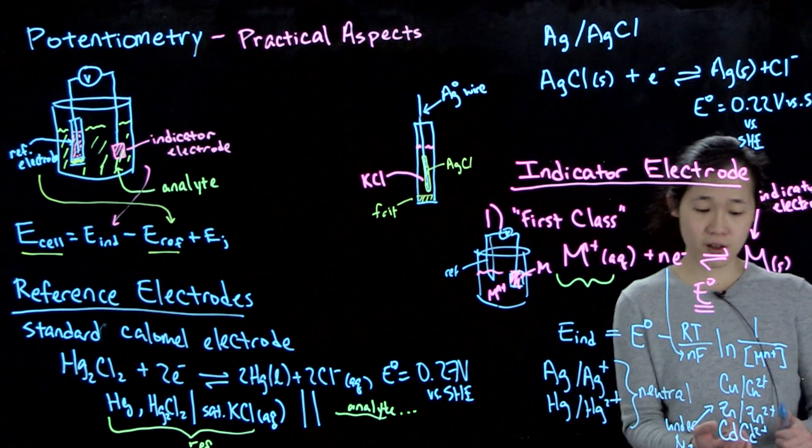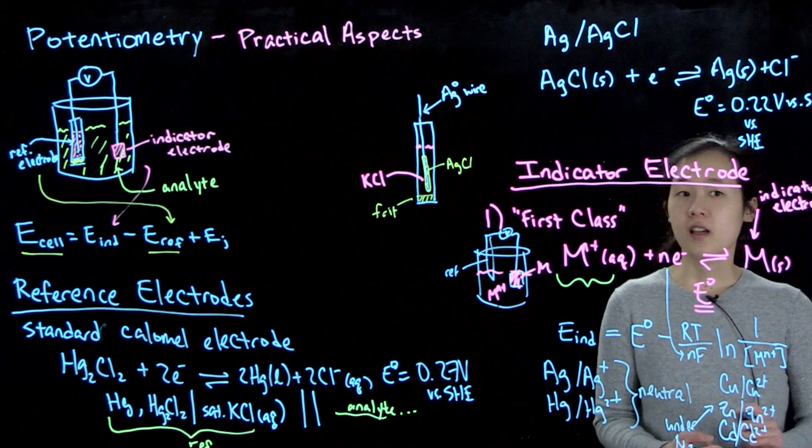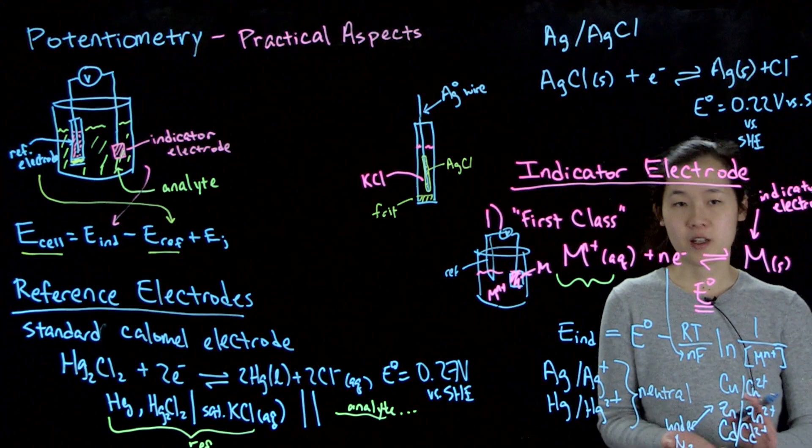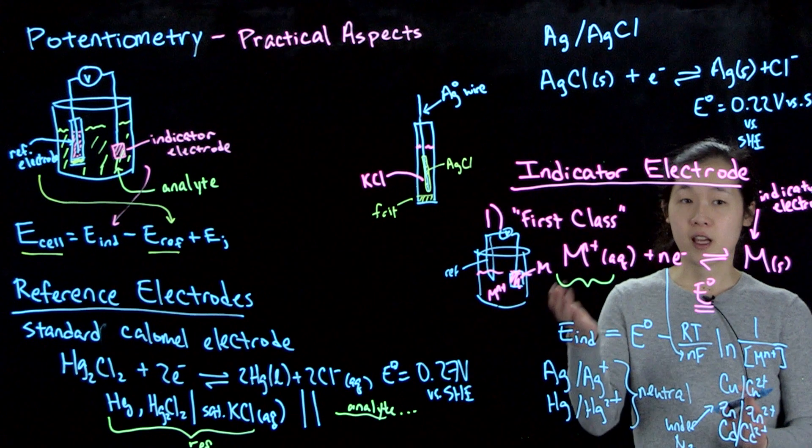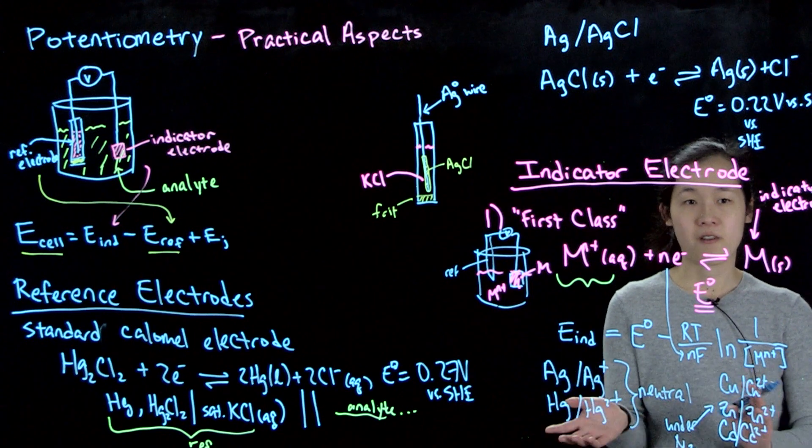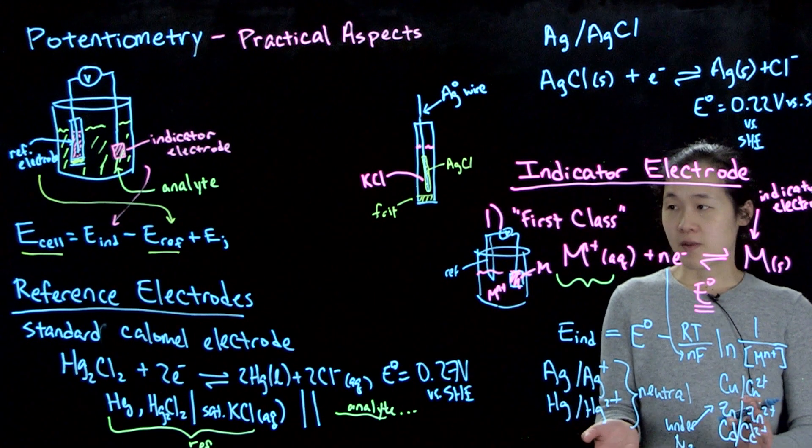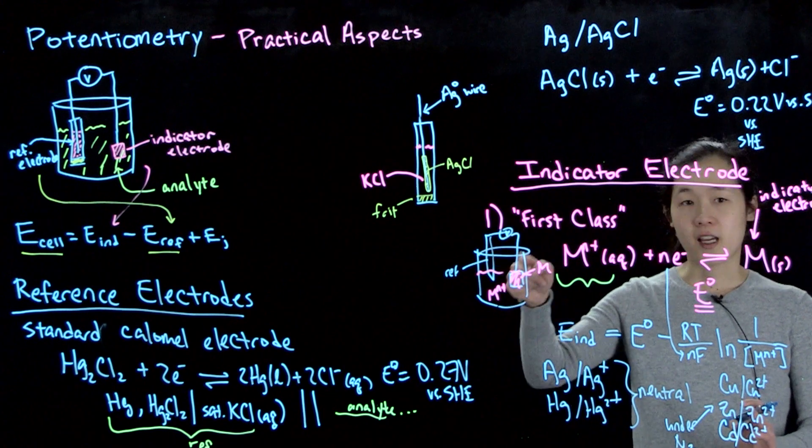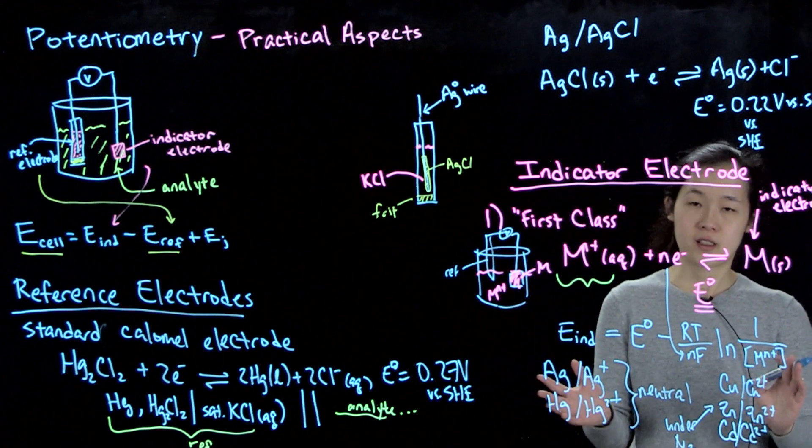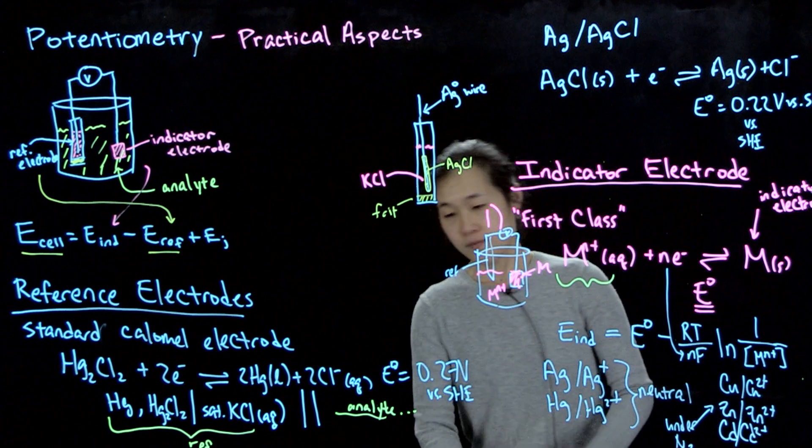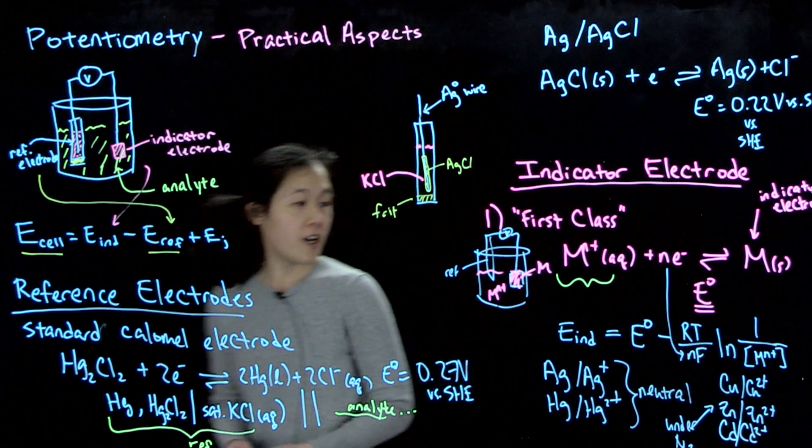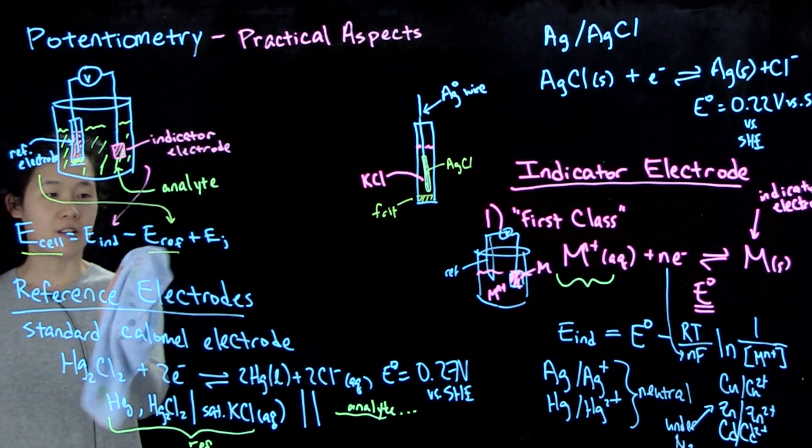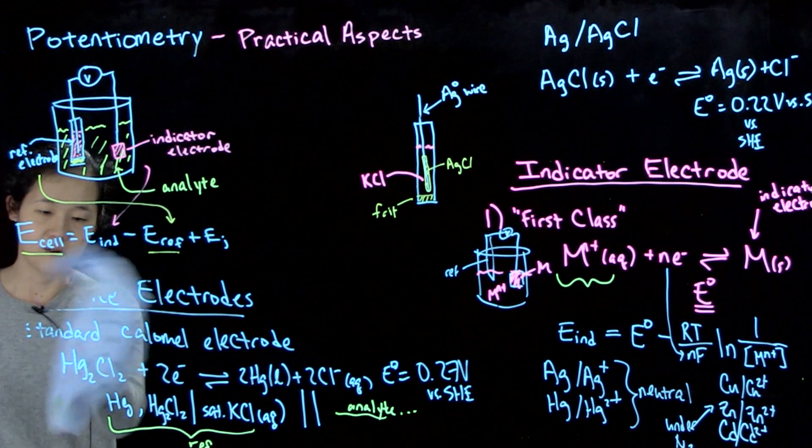So let's say you wanted to measure cadmium in solution. Cadmium is toxic in some sort of water, let's say, like Michigan. You could use an indicator electrode to do that. So it would be a really powerful way to do it. And a relatively easy measurement, right? You just need to have a voltmeter and this setup. And you can just dip it in without having to do some crazy titration.